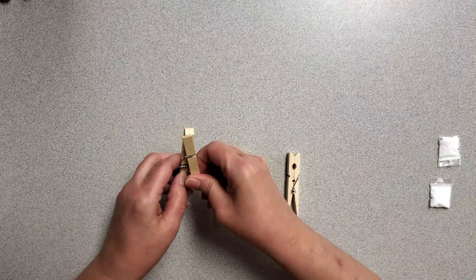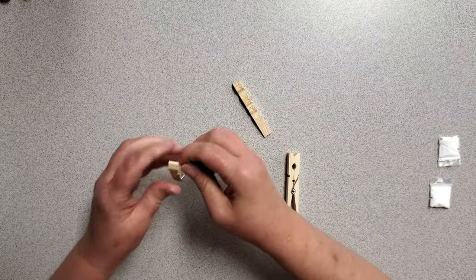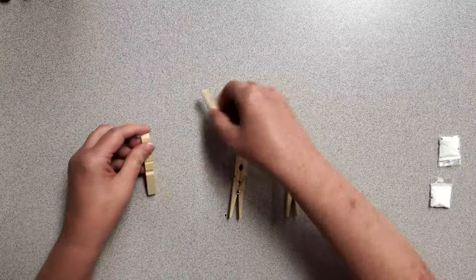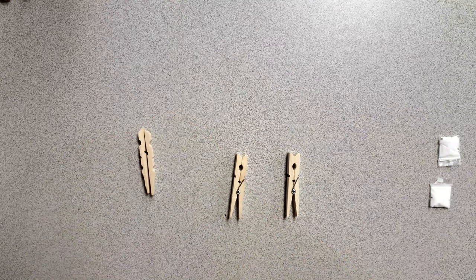So we start by disassembling our clothespins. With a simple twist you can remove the spring mechanism and we just set that aside. Each trivet will take between 19 and 21 clothespins depending on the size of the clothespin itself.